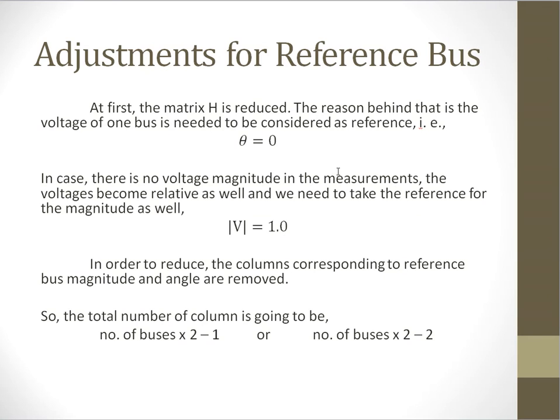You remember that we dropped theta 1 from the state vector. We need to adjust that for the Jacobian matrix. To adjust that, we need to drop the column of the Jacobian matrix corresponding to theta 1.